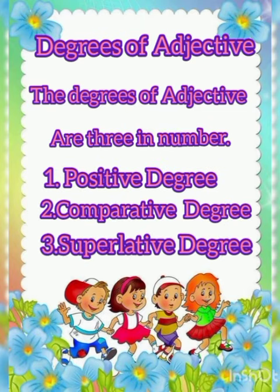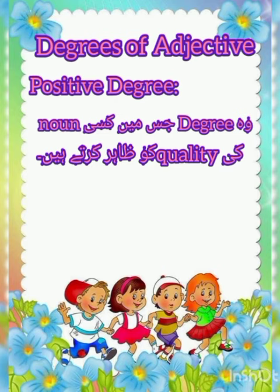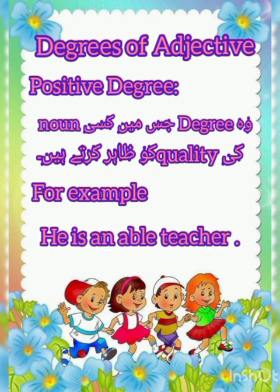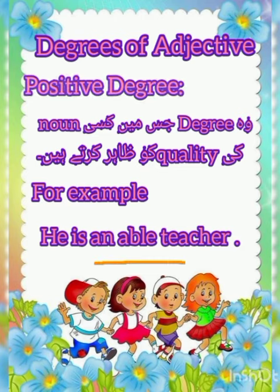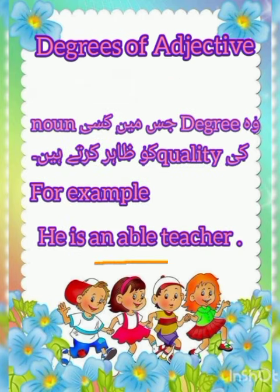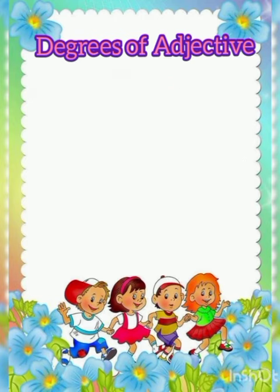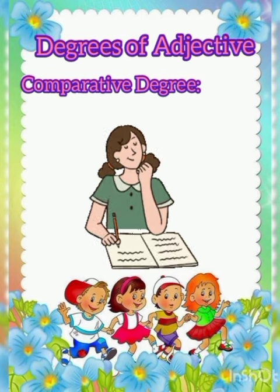Positive degree is a degree in which we describe the quality of a noun. For example, he is an able teacher. Here, able describes the teacher's quality.